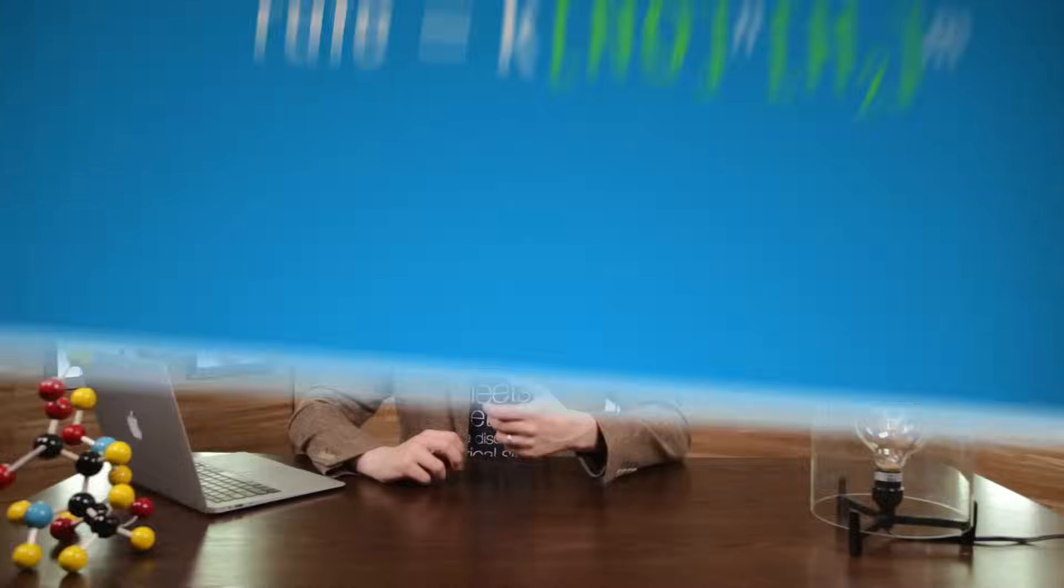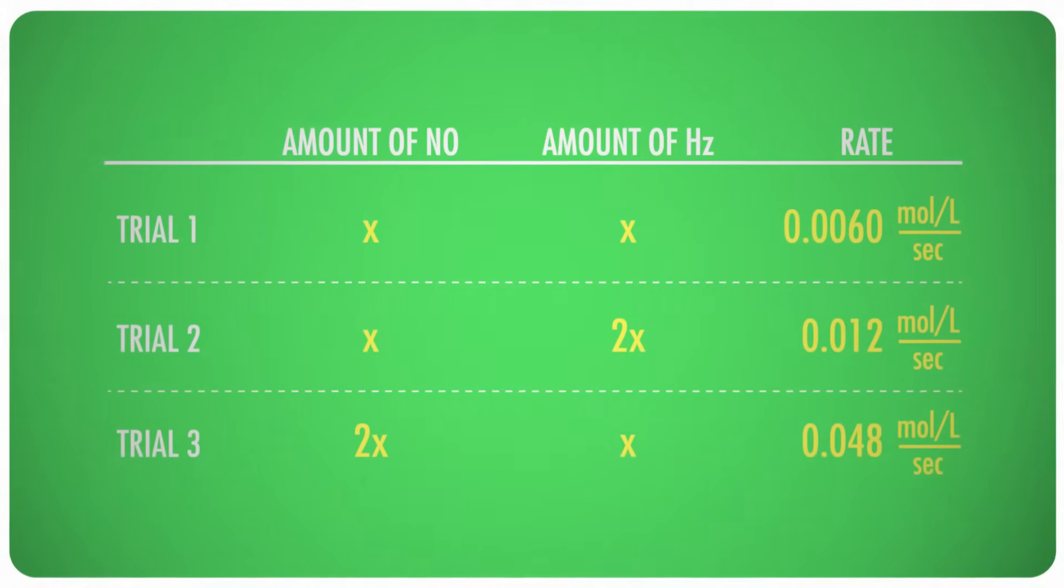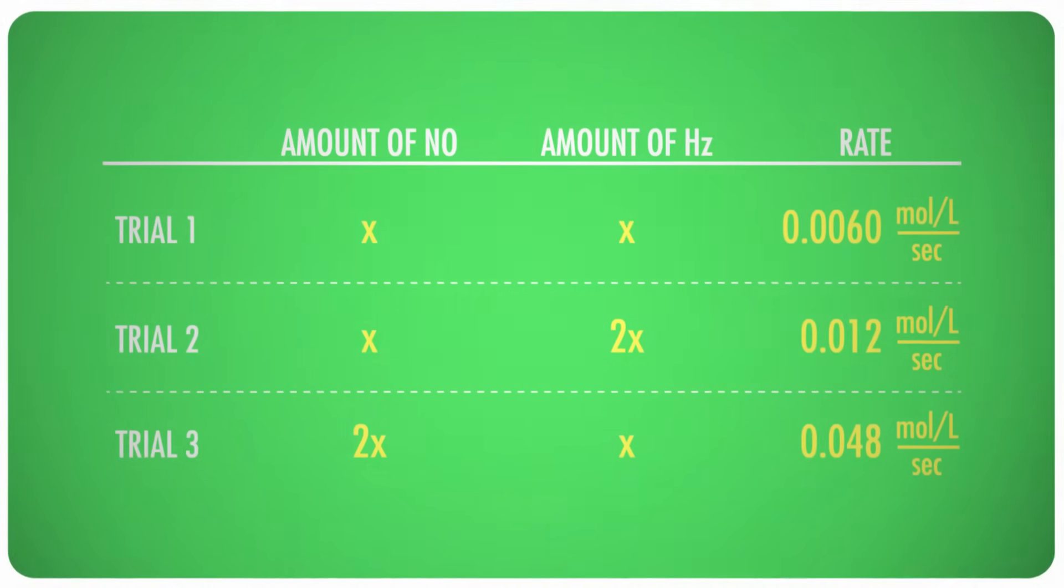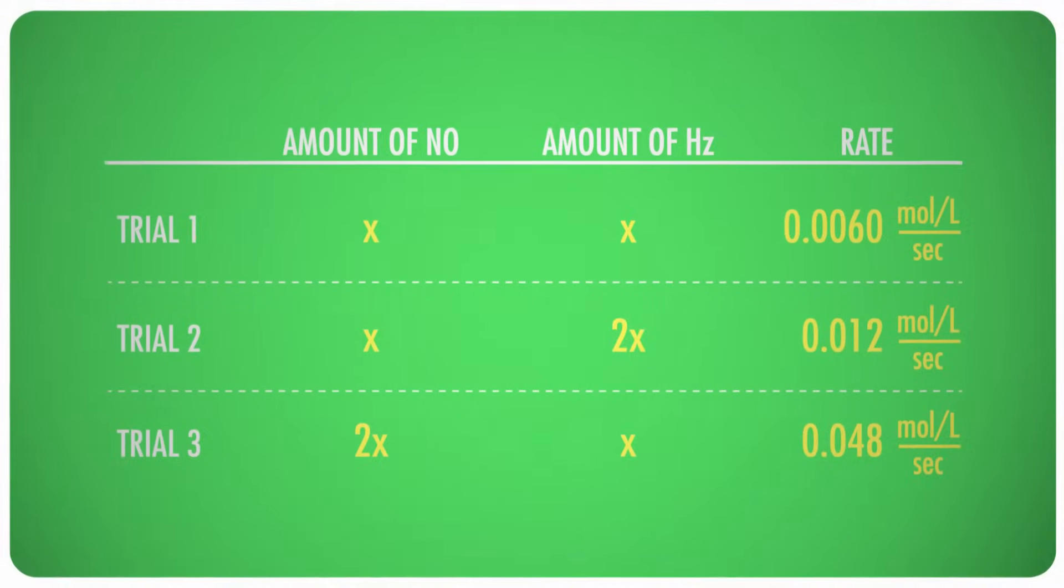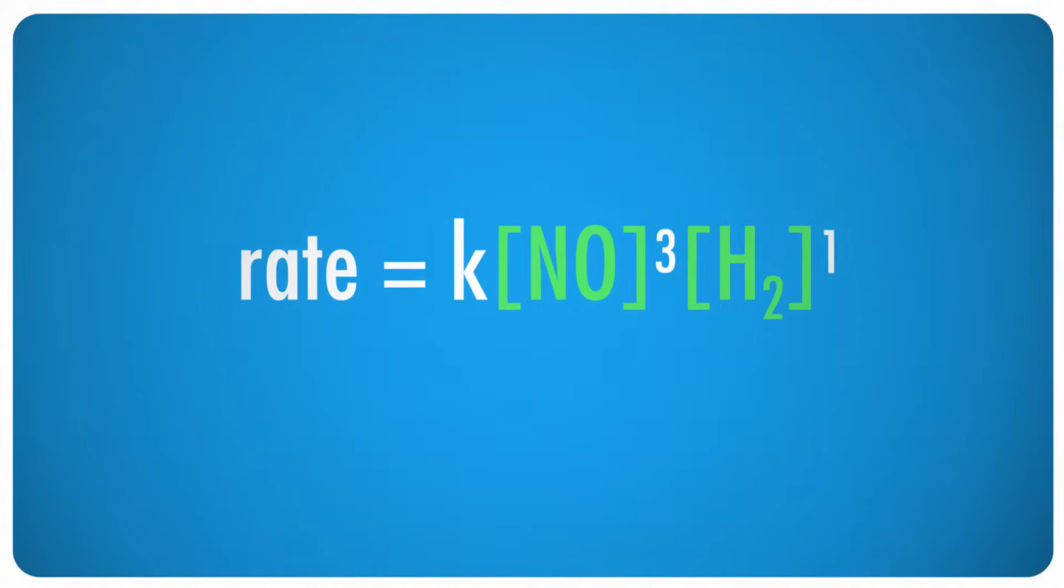What does this tell us? Well, doubling the hydrogen doubled the rate, meaning that the rate and the H2 concentration change in exactly the same way. So in the rate law, this can be expressed by the concentration being raised to the power of 1. Finally, we do it one last time with the original amount of hydrogen, but twice as much NO. And this time, we find that we get a rate of 0.048 moles per liter per second. Doubling the nitric oxide caused the rate to increase by 8 times, and that can be expressed in mathematical terms by cubing the concentration term.